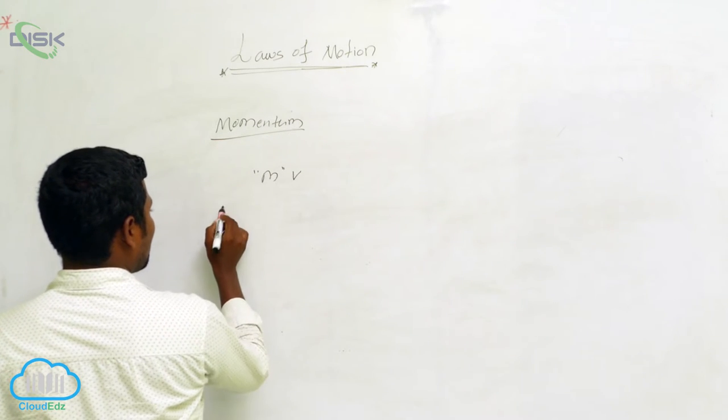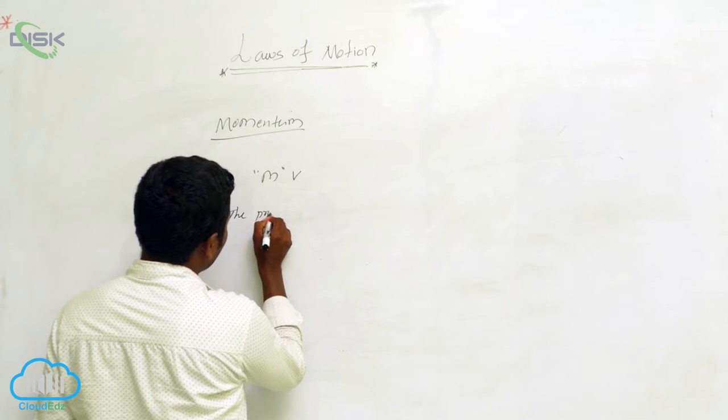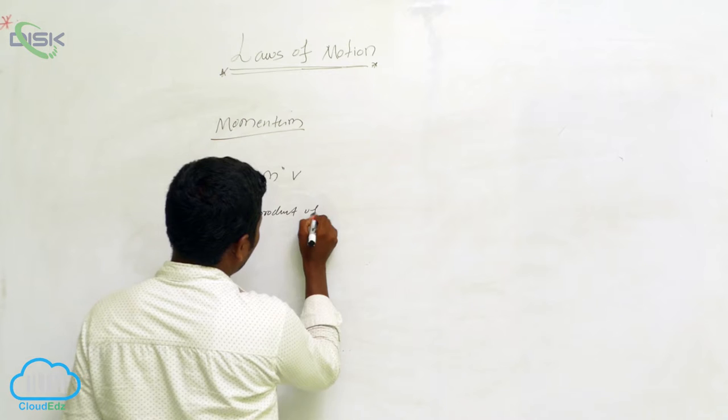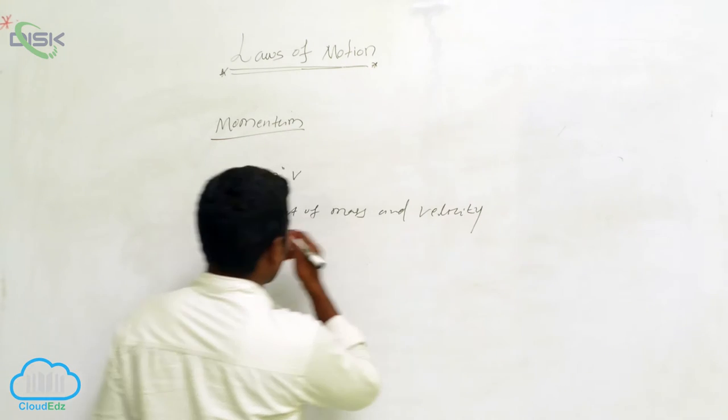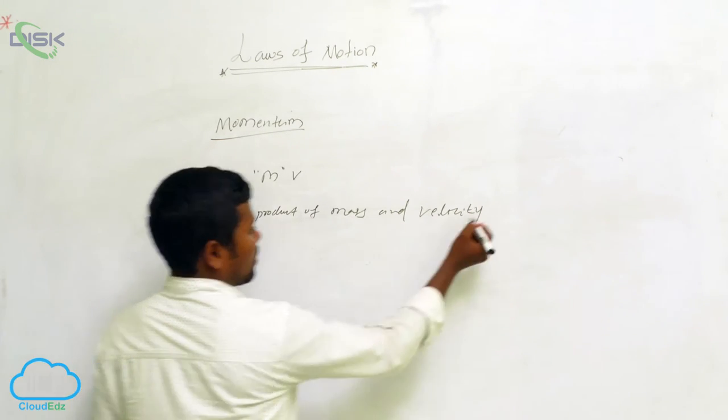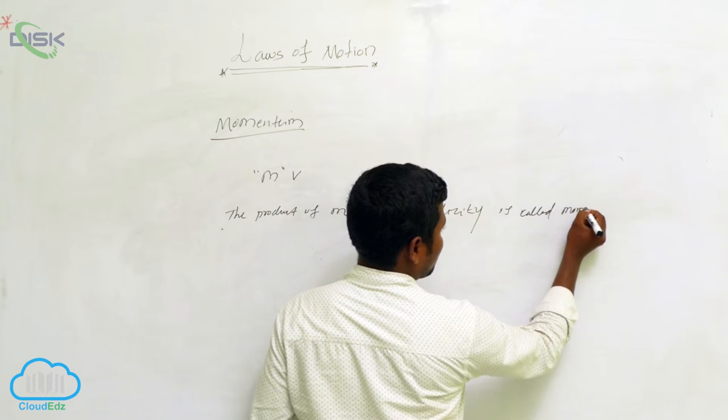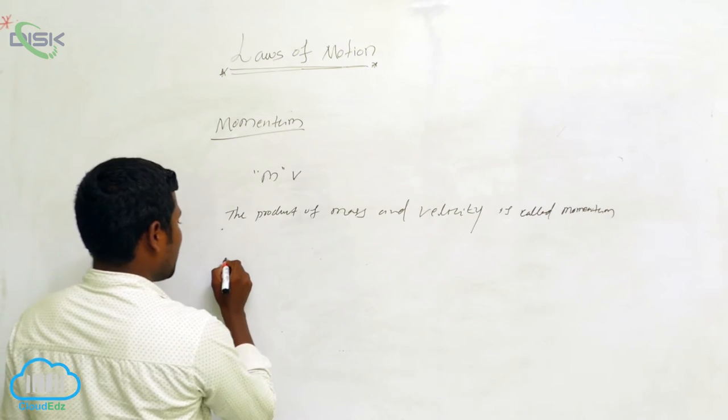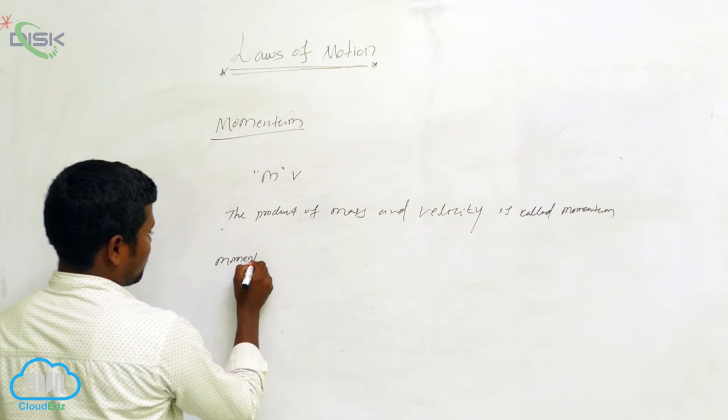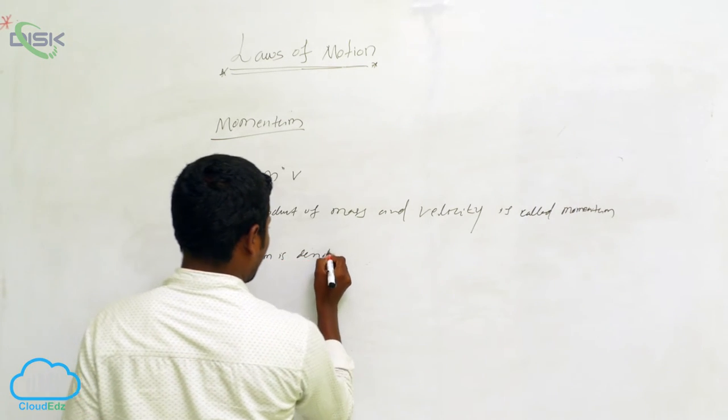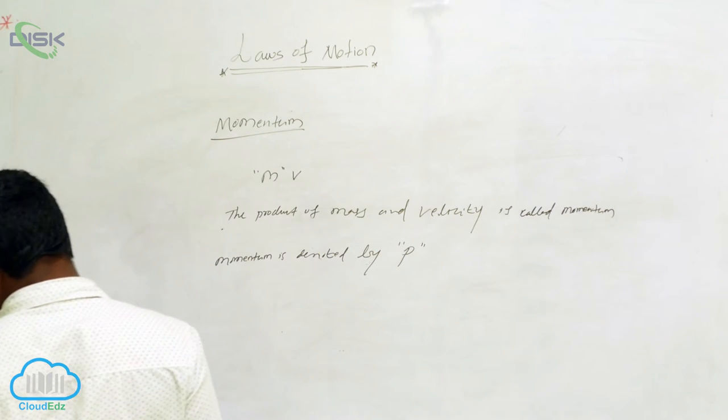Then what we can say, momentum means the product of mass and velocity is called momentum. Momentum is denoted by small p.